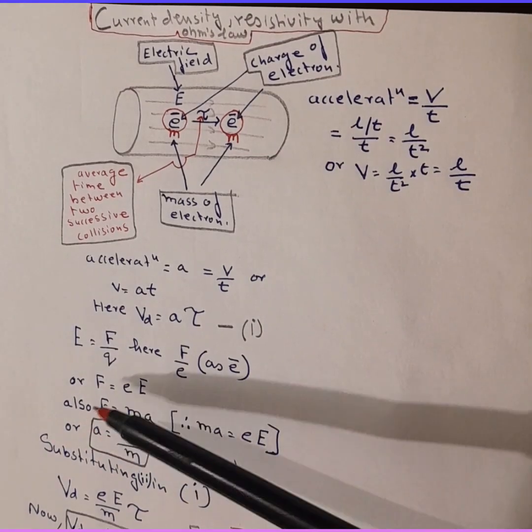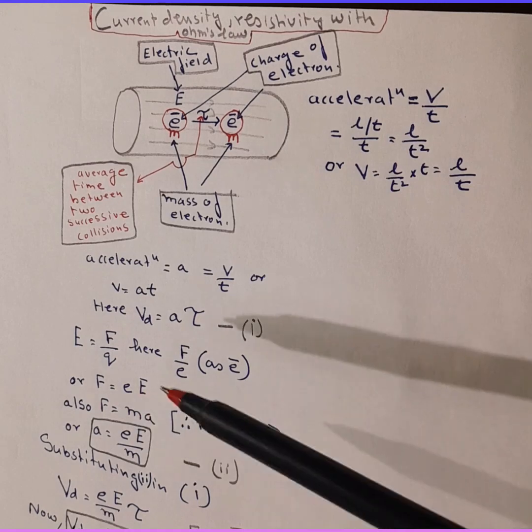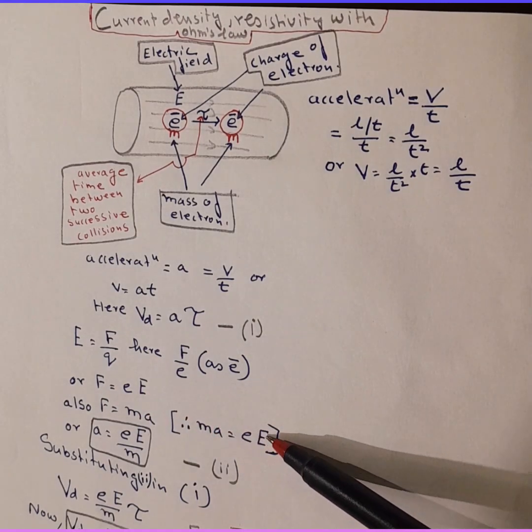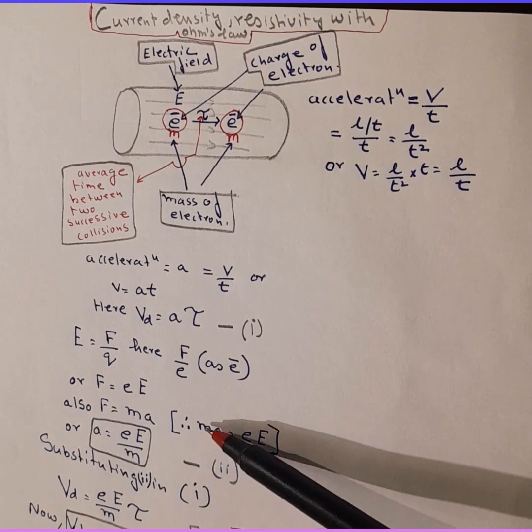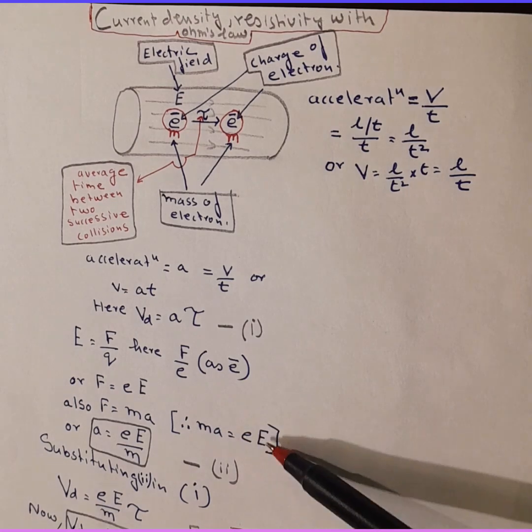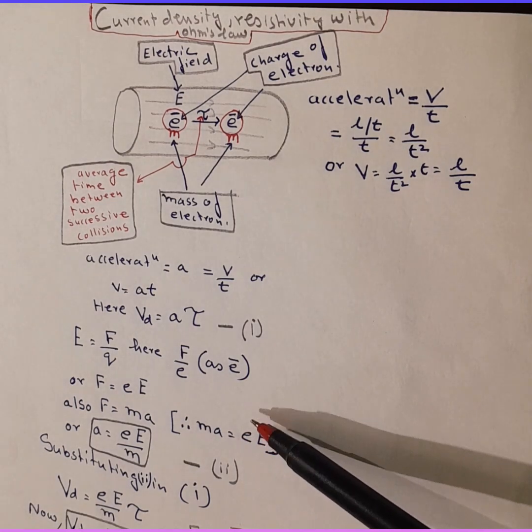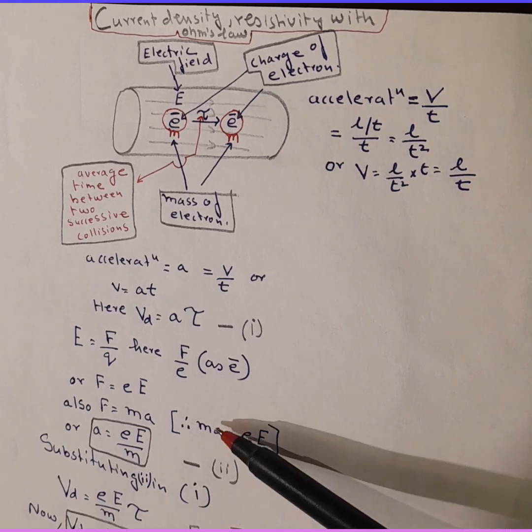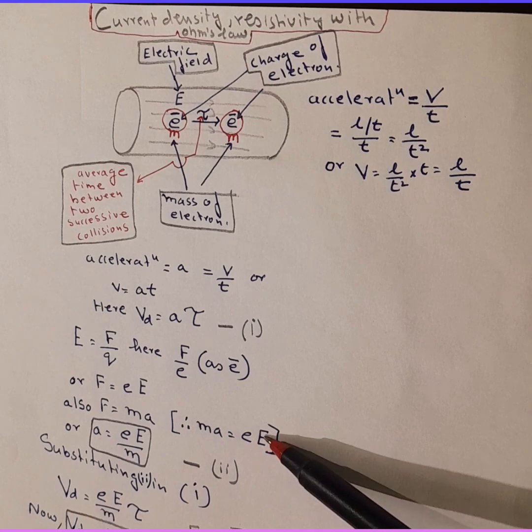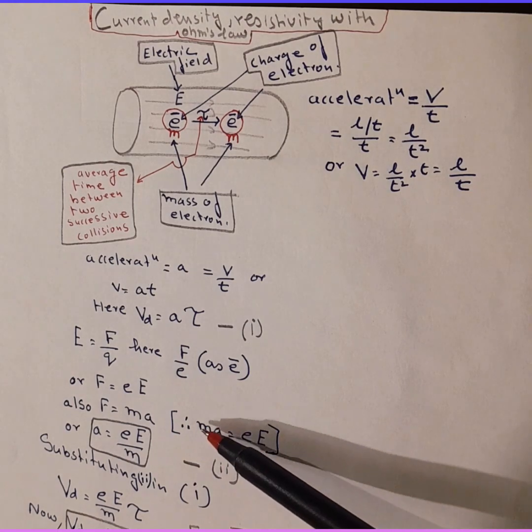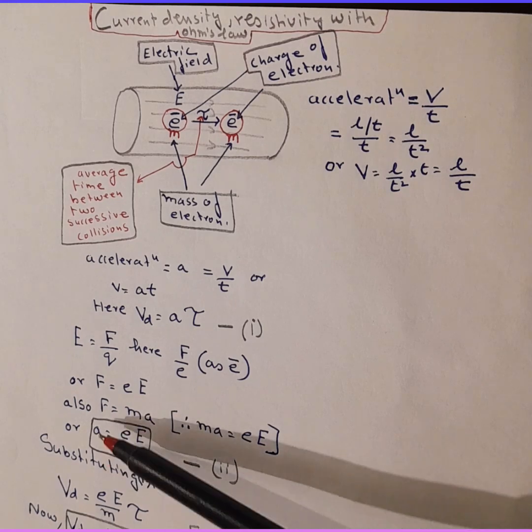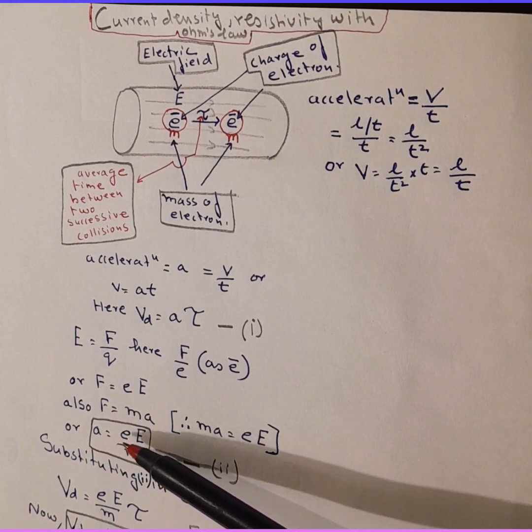Here force is equal to MA in mechanical terms, whereas in electrostatic terms it is e into capital E. So these are both the formulas for force, force mechanical and force electrostatic or electrical. So acceleration is, I take mass below e over E, so acceleration becomes eE over M. That is the new formula for acceleration that we derived.